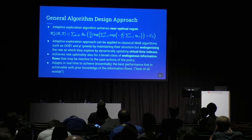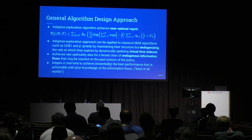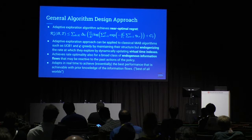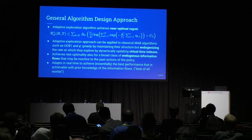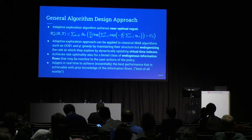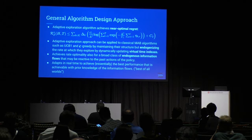Our proposed approach achieves a regret rate matching the lower bound. It is also one example of a broader policy design approach and can be used to adjust classical MAB algorithms such as Epsilon-Greedy and UCB1 to react to unknown auxiliary information flows. It achieves rate optimality for a broad class of endogenous information flows reactive to past policy actions. Without any prior knowledge, these algorithms adapt in real time to achieve the best performance — a best-of-all-worlds type of behavior.